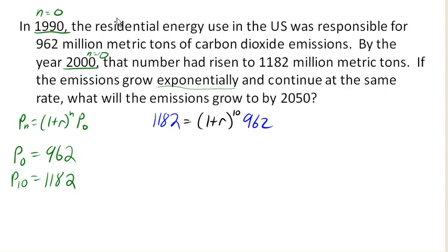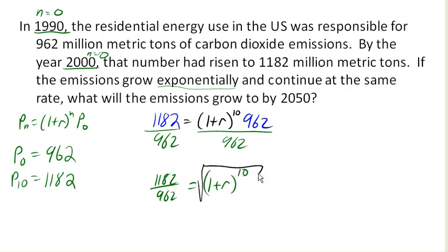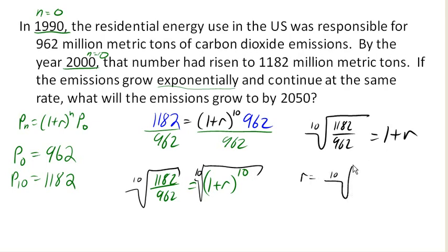So now we can go ahead and use some algebra to solve this. So we'll go ahead and start by dividing both sides of the equation by 962, which gives us 1182 over 962 equals 1 plus R to the 10th power. And now we need to get rid of that 10th power, we're going to have to take the 10th root of both sides. So all together that gives me the 10th root of 1182 over 962 equals 1 plus R, because the 10th root undoes the power of 10. And now I can subtract 1 from both sides in order to get my R. So R is going to be the 10th root of 1182 over 962 minus 1, after subtracting 1 from both sides.